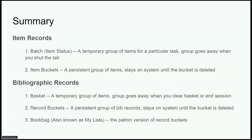To summarize: for item records, a batch in item status is for temporary use; an item bucket is a persistent group of items that stays on the system until deleted. For bibliographic records, a basket is a temporary group that goes away when you clear it or end the session, and applies to both patrons and staff. Record buckets are for staff — a persistent group of records that stay on the system until deleted. A book bag is the patron version of a record bucket, but may also be a handy way for staff to create shareable lists.